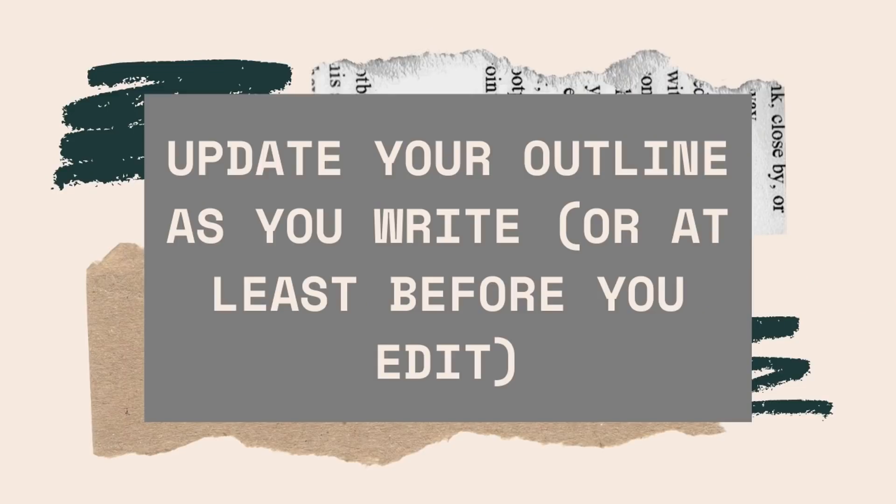Update your outline as you write, or at least before you edit. Because the methodological plotter relies so much on methodology, it's extremely helpful to keep updating your outline or template as you write. Any time you make changes, try to reflect those changes in the outline so that when you go to the editing process, every change has been recorded. If that disrupts your flow, that's fine — just make sure you update the outline before you move into the editing phase. If you end up deviating significantly from your outline, take a break, reorient yourself, and edit and tweak the outline to get it back to where you want it before moving forward. It's not usually a great idea for a methodological plotter to move forward without a map.